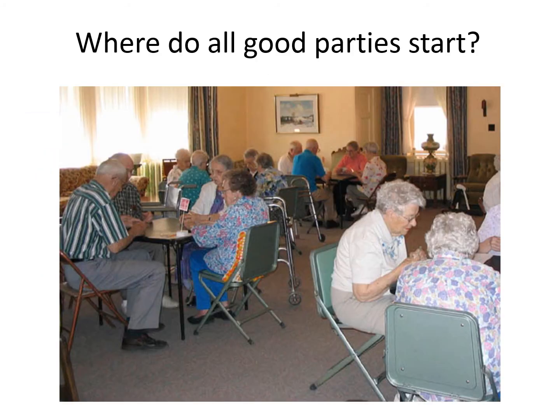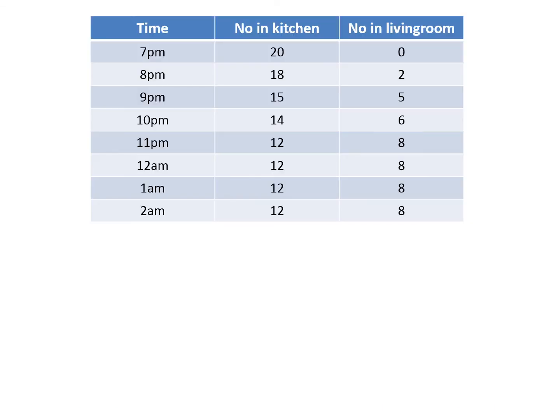So where do all good parties start? In the kitchen. So if we imagine that at seven o'clock, everybody's in the kitchen and then slowly people start to move through to the living room. And then by about 11 o'clock, there is 12 people in the kitchen and eight in the living room.